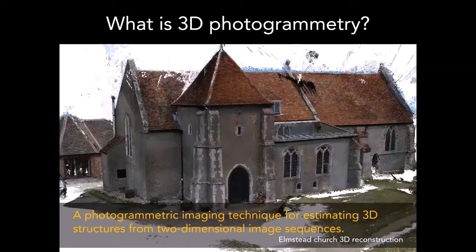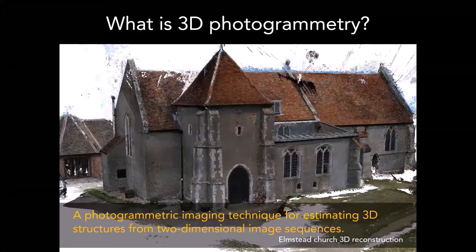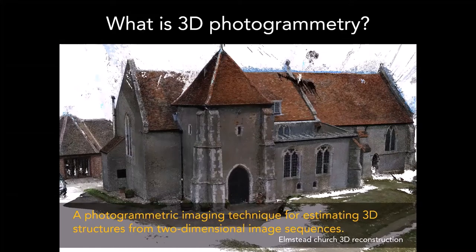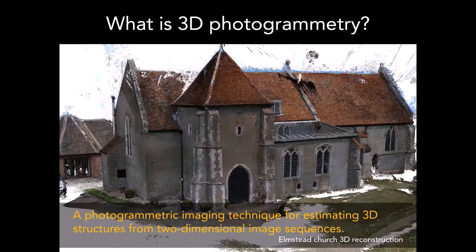Photogrammetry works by taking lots of images and with some very clever software it calculates the viewpoints and places data points within three-dimensional space. What you're looking at here in this church is not a picture of a church but a series of data points in 3D space that are colored the same color as the dot from several images that say where it should be.